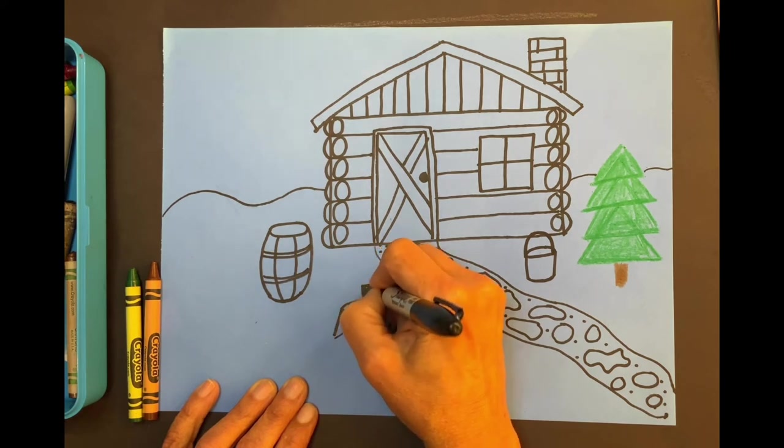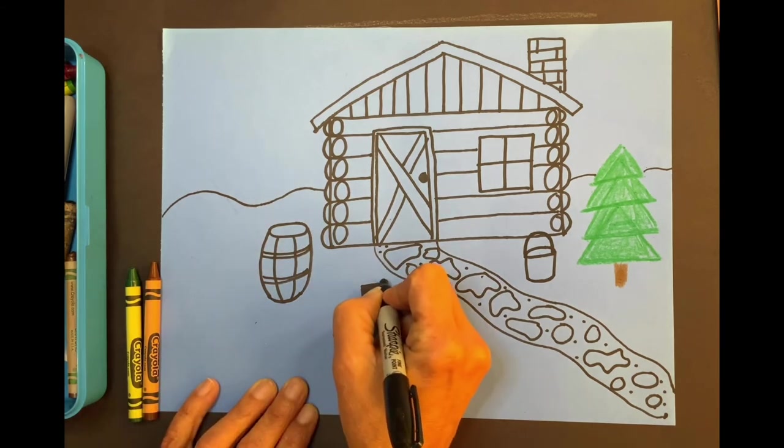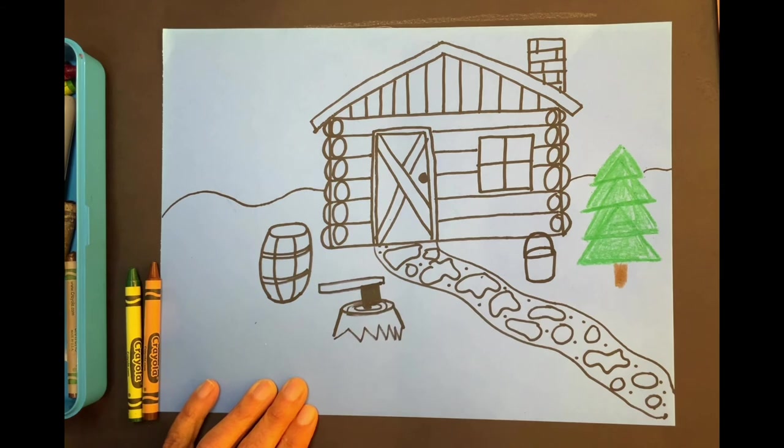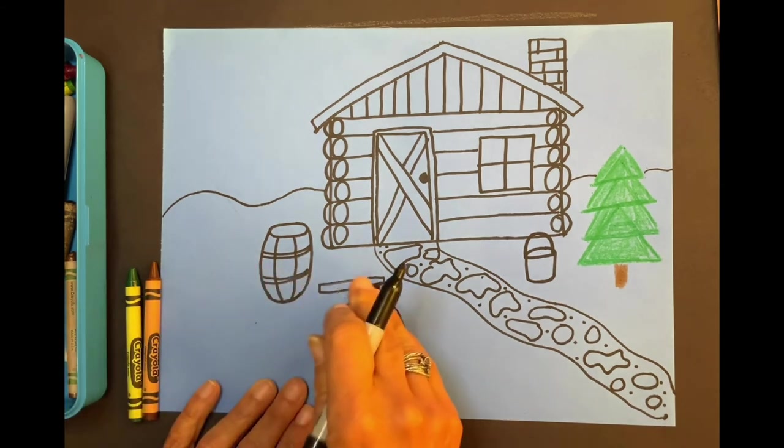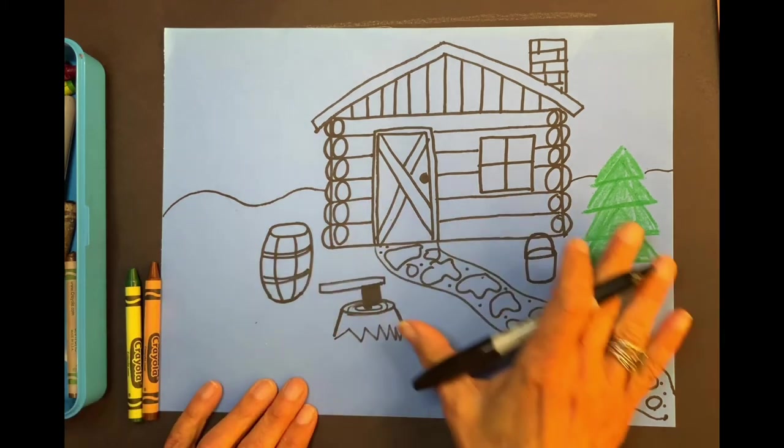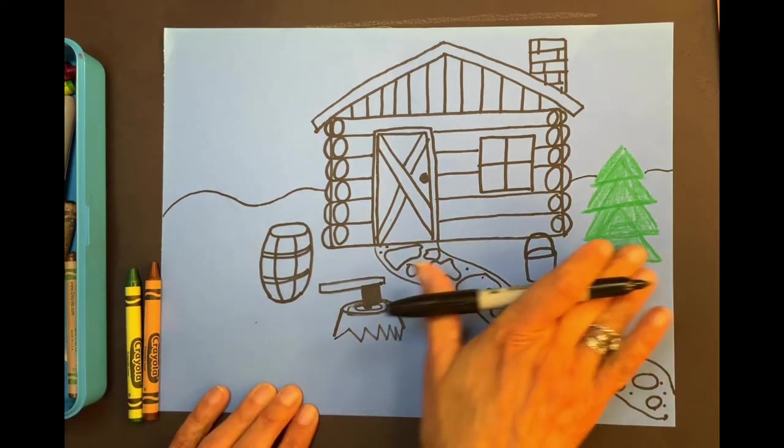So I'll make a little square and I'm going to color it in. And then it needs a handle. So more rectangles and squares. Sometimes they left it in the log when they finished cutting it for the next time. Great.